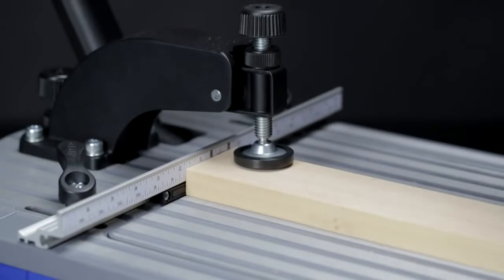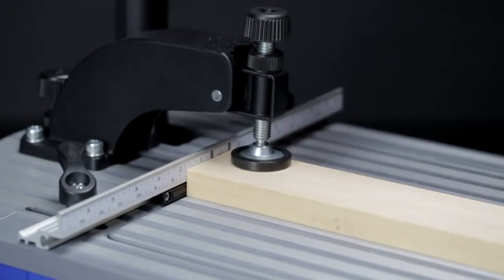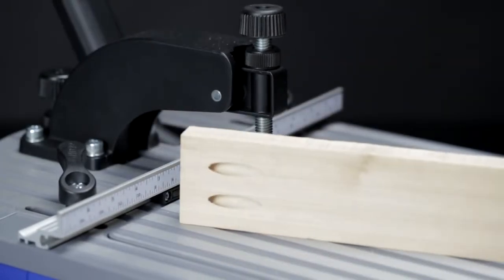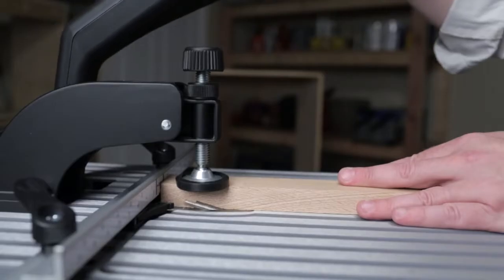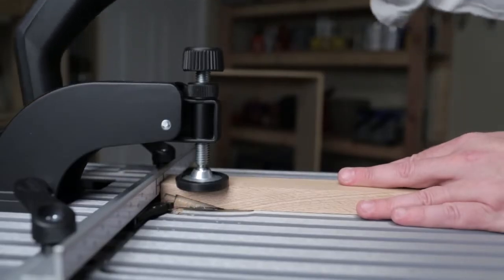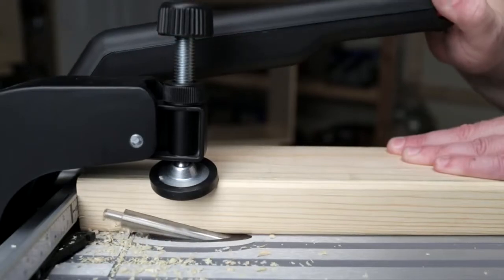On top of all these impressive features, the Foreman is the first pocket hole machine that creates all three Craig joint sizes: the incredibly versatile standard Craig joint, the small but mighty Craig micro pocket joint, and the heavy-duty Craig HD joint.